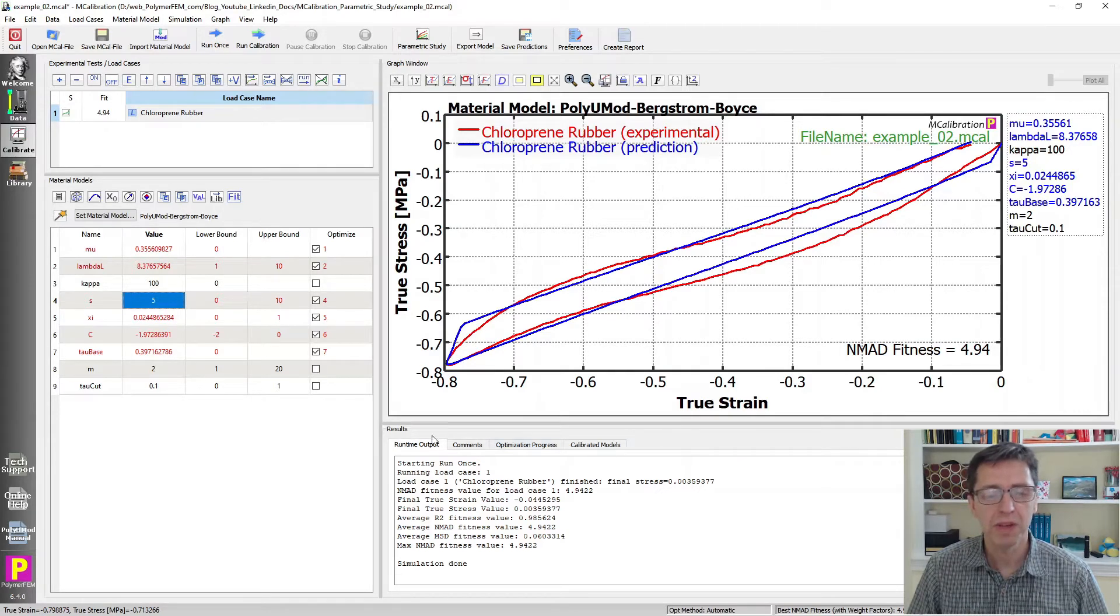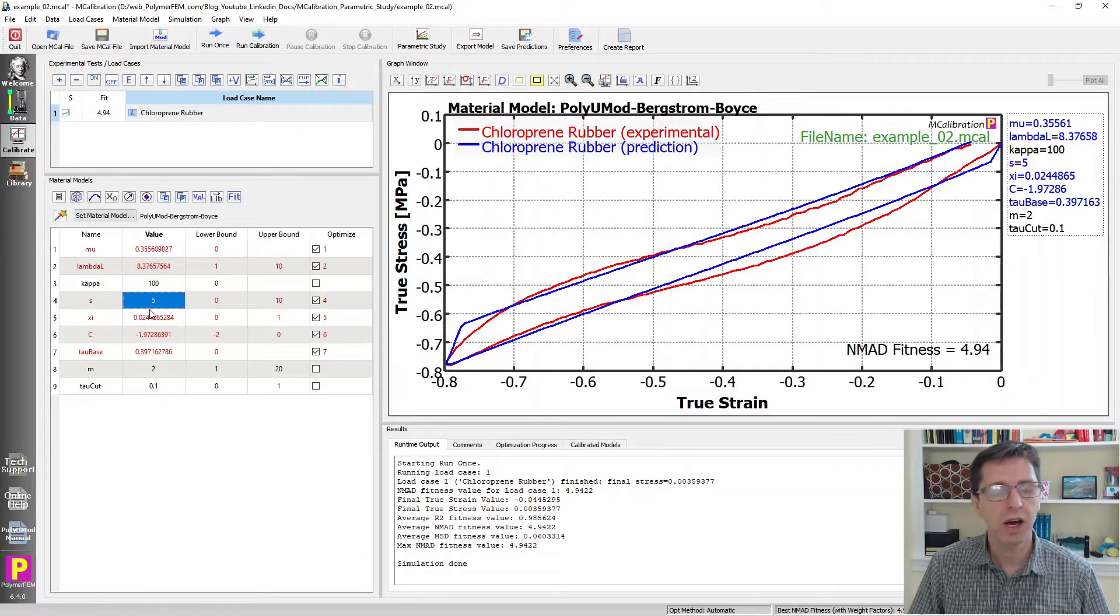There's some ways to deal with this and better understand what changes in these parameters do for all the different materials, and the way to do that is to use a parametric study.